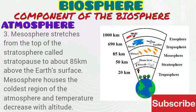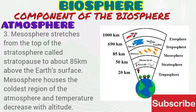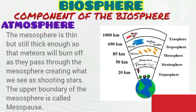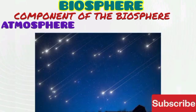The third layer of the atmosphere is called the mesosphere, which stretches from the top of the stratosphere — the stratopause — to about 85 km above the surface of the earth. The mesosphere houses the coldest region of the atmosphere and temperature decreases with altitude in the mesosphere. The mesosphere is relatively thin but dense enough that material will burn off as it passes through, creating what we see as shooting stars.